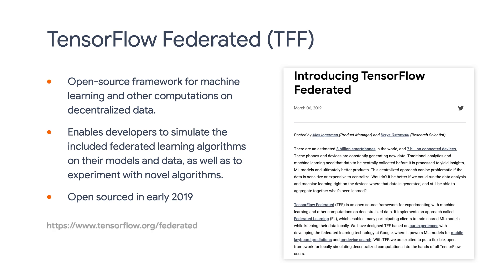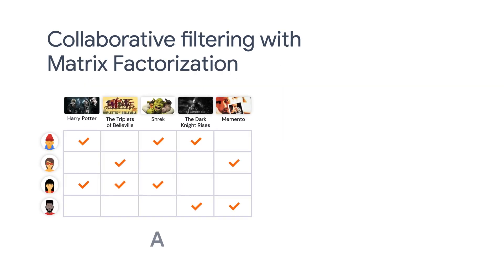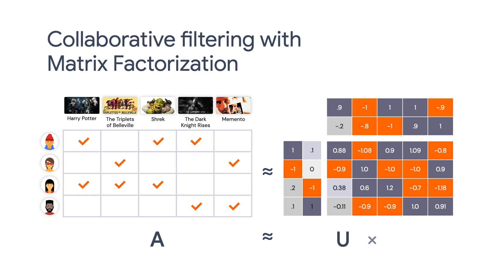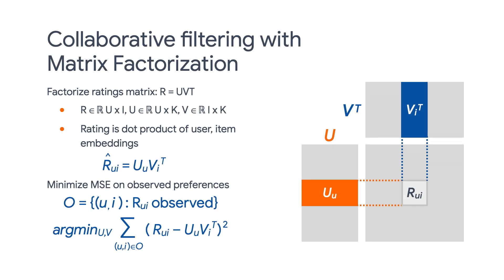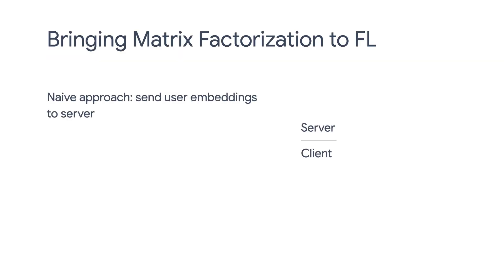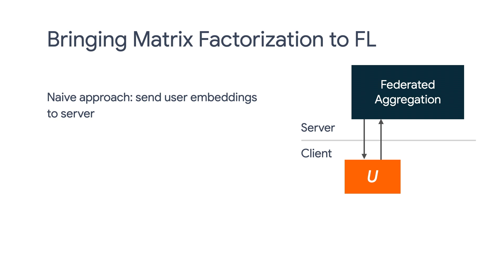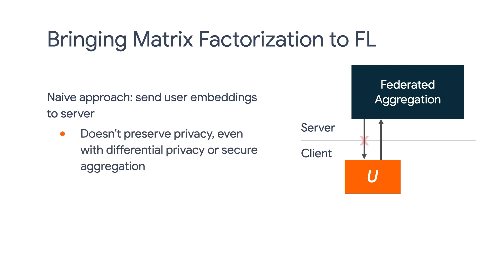Make sure to check out the link to learn more about TensorFlow Federated. Coming back to our recommendation system scene, by now you are already familiar with collaborative filtering with matrix factorization. In the matrix factorization setting, we want to learn the user and item embeddings U and V, respectively, to minimize the mean squared error for the ratings. A naive approach is to send the user embeddings along with item embeddings to the server for training purposes. But that doesn't preserve user privacy even with advanced privacy protection techniques such as differential privacy or secure aggregation, because the user embeddings are specific to each user and any user embedding updates will reveal user-specific information by definition.